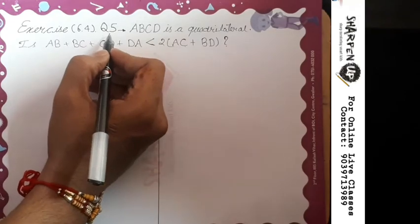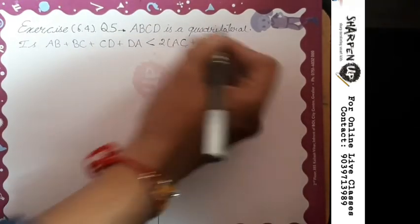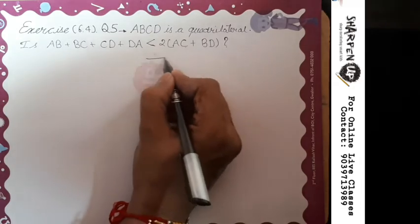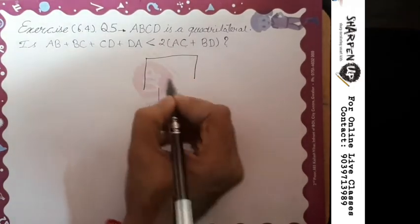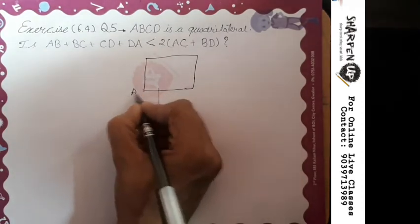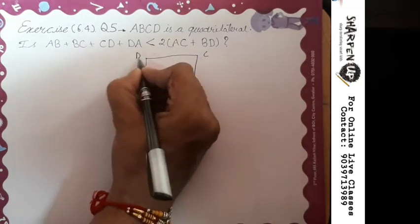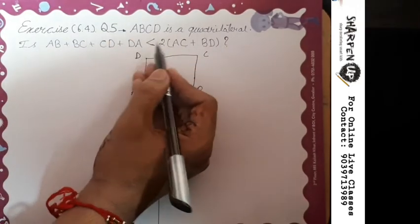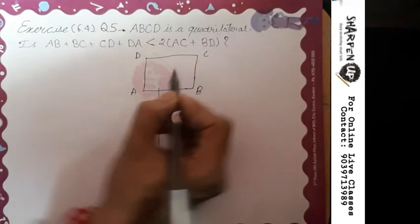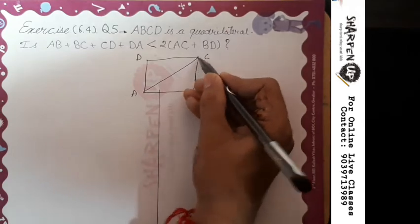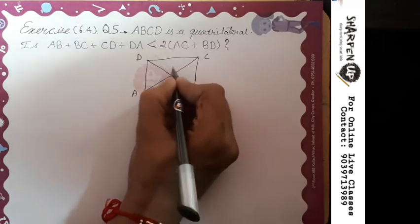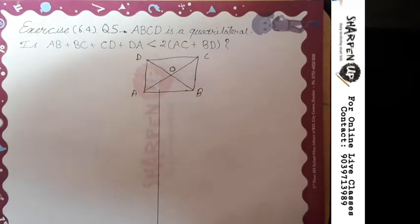Exercise 6.4, question number 5. ABCD is a quadrilateral. No figure is given, so we make a rough figure of the quadrilateral with vertices A, B, C, D. We are asked to prove that AB plus BC plus CD plus DA is less than 2 times of AC plus BD. AC is the first diagonal and BD is the second diagonal. We consider a point O where these two diagonals intersect.